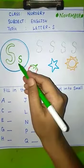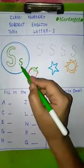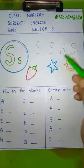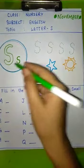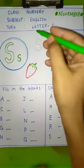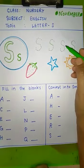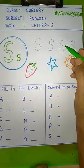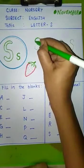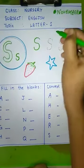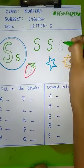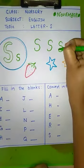This is letter S. S for strawberry, S for star, and S for sun. Now learn the formation of letter S. Trace the dots. This is letter S.